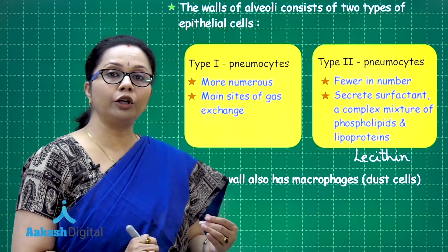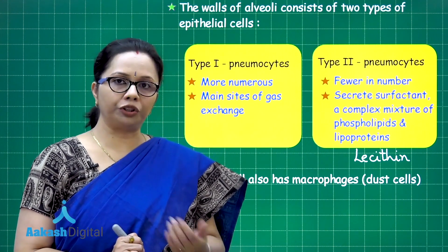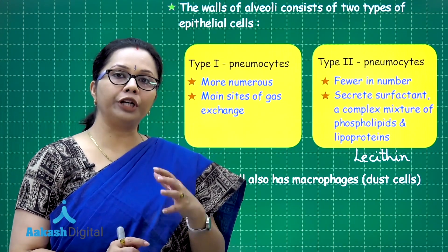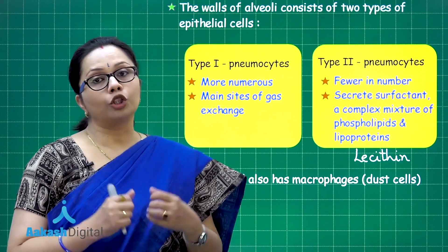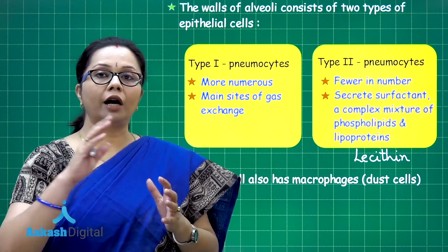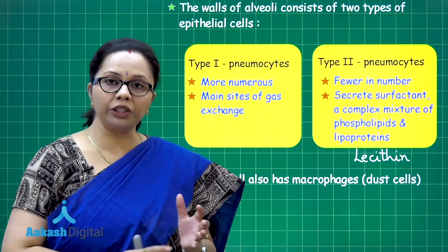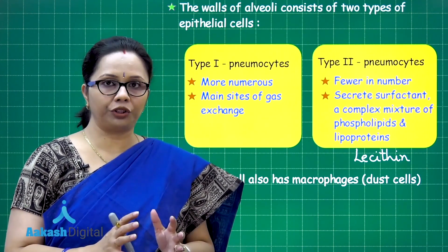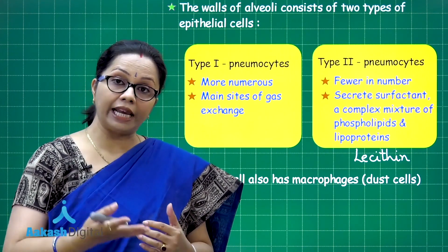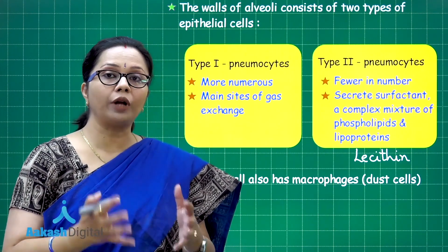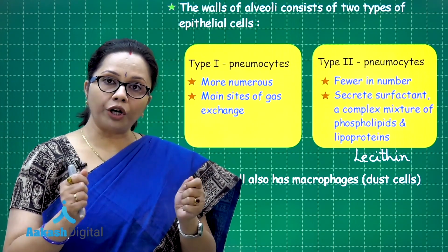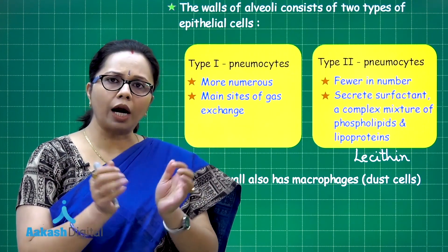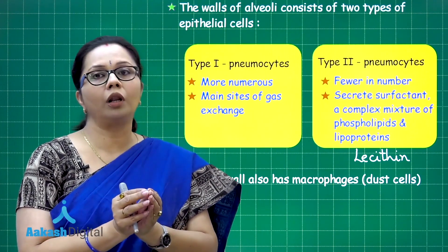Surface tension is the property of moisture or water which tends to reduce the surface area. The alveoli have a moist inner lining, and if it were pure moisture, upon exhaling air this moisture would tend to bring the walls closer, causing the alveoli to acquire a very small size.